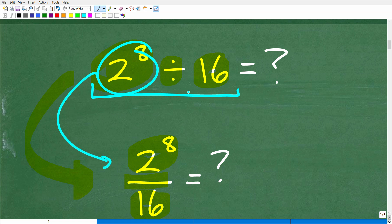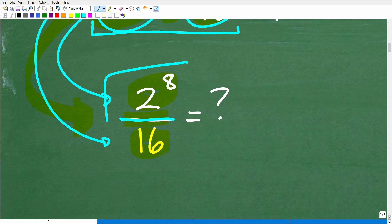Okay, so this would be the numerator, and the 16 would be the denominator. So 2 to the 8th divided by 16. So the first thing I'm going to do is go ahead and rewrite the problem like this. Okay, now, why is this a nice way to rewrite this problem?